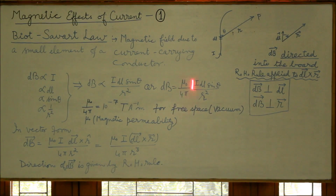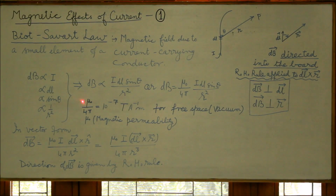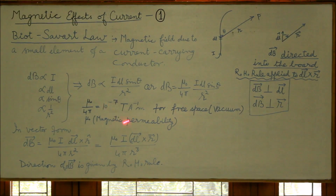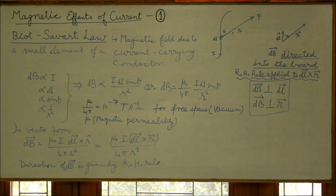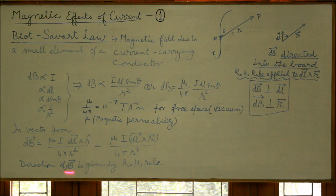Combining these factors: dB is proportional to I dl sin θ / r². Or in equation form: dB = (μ₀ / 4π) × (I dl sin θ / r²). The constant μ₀ is called magnetic permeability, and the value of μ₀ / 4π is 10⁻⁷ tesla per ampere-meter for free space or vacuum.